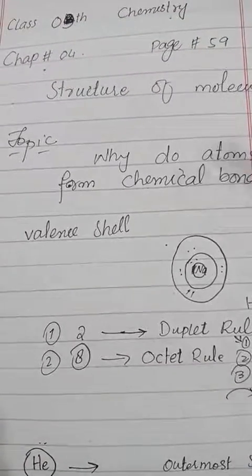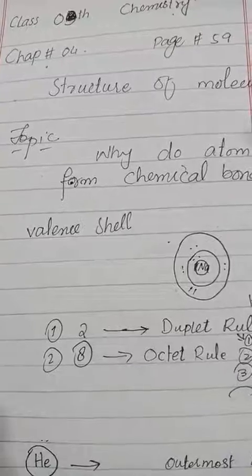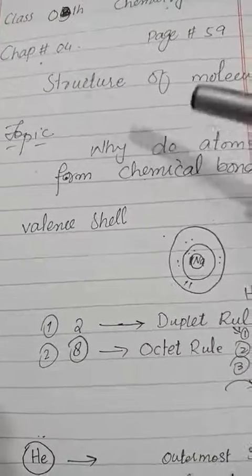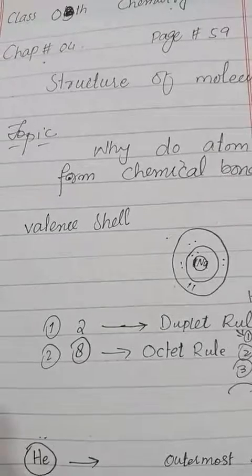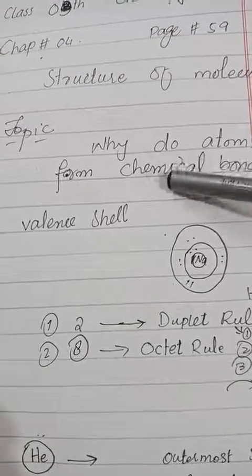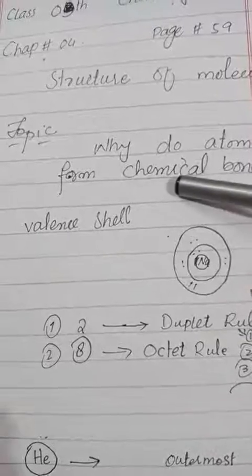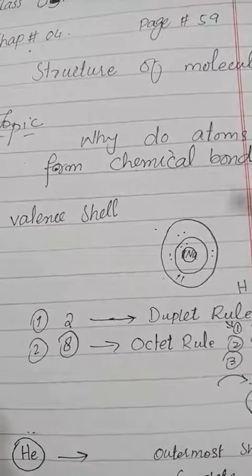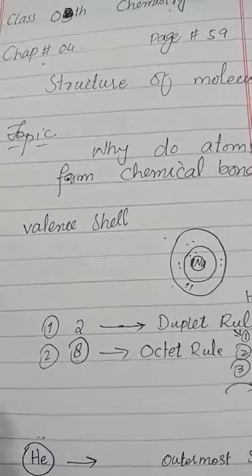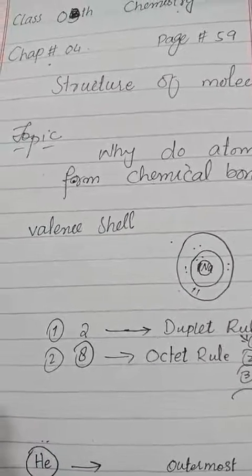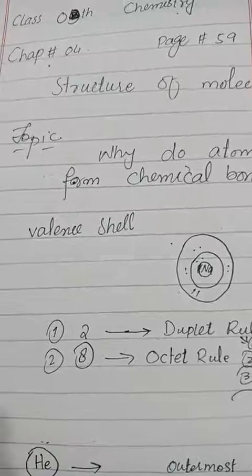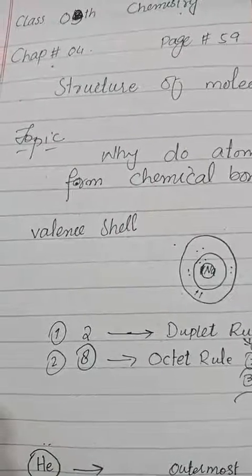We read that in atoms, covalent bond is present, ionic bond is present, coordinate covalent bond is present. So first we need to study why they need to form chemical bonds. This is a universal truth — a universal rule — that anything present in this world...